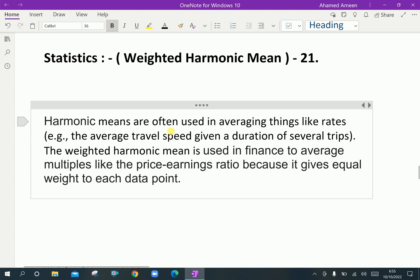Harmonic means are often used in averaging things like rates, i.e. the average travel speed given a duration of several trips. The Weighted Harmonic Mean is used in finance to average multiples like the price earning ratio because it gives equal weight to each data point.